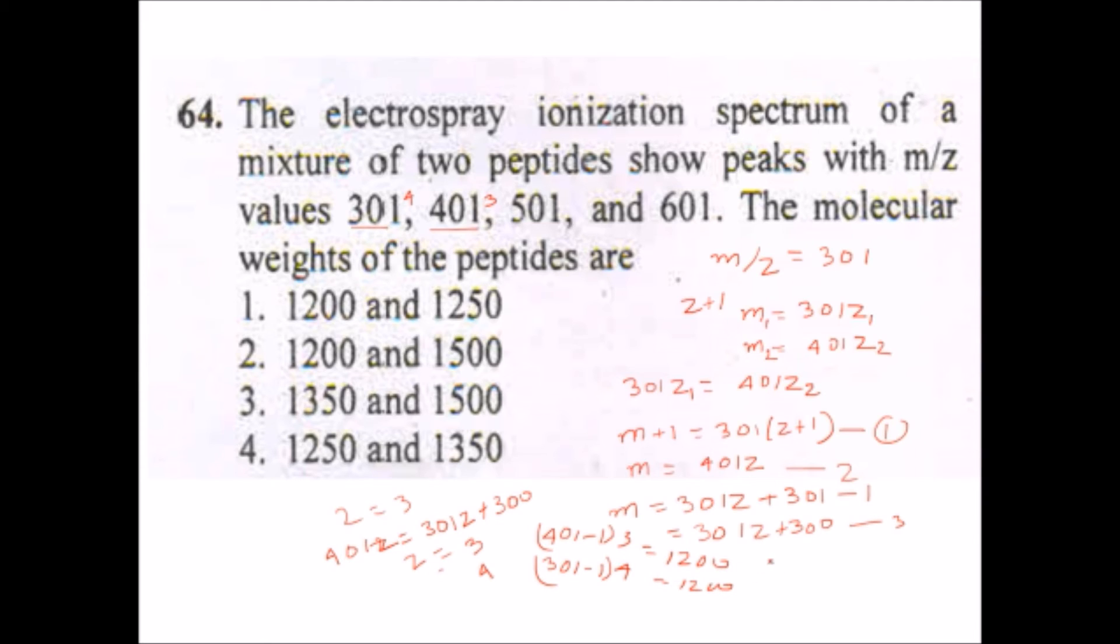So we can calculate mass as: the formula for calculation is mass is (401 minus 1) × 3, and we will take average of (301 minus 1) × 4, which equals to 1200. It equals to 1200 and when we take the average it will be 1200. So now we have calculated the mass for one peptide.